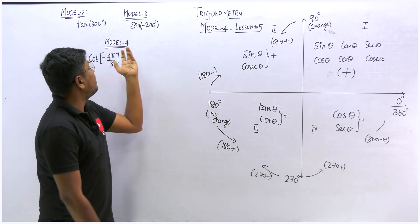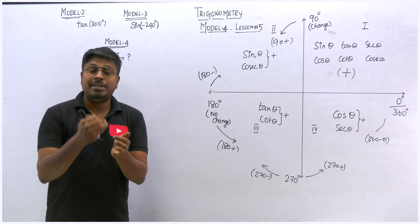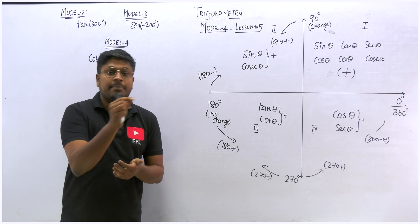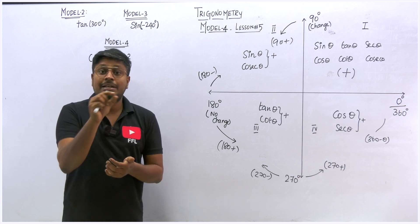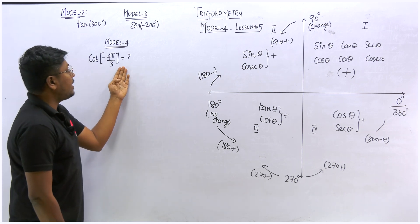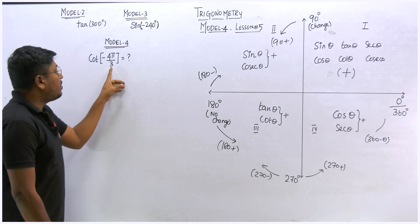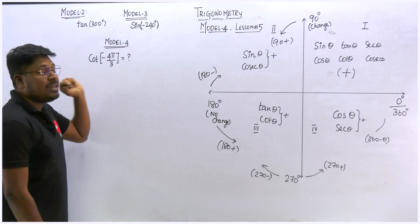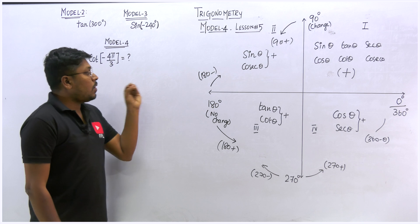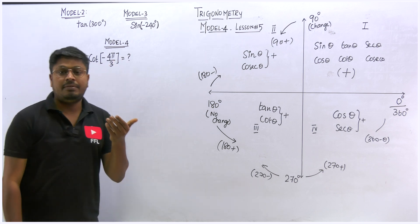Model number 2 is about the sign of some number but in positive terms. In model number 3, we solved a question similar to model 2 but with a negative symbol. In model number 4, the question contains pi — for example, minus 4 pi by 3.